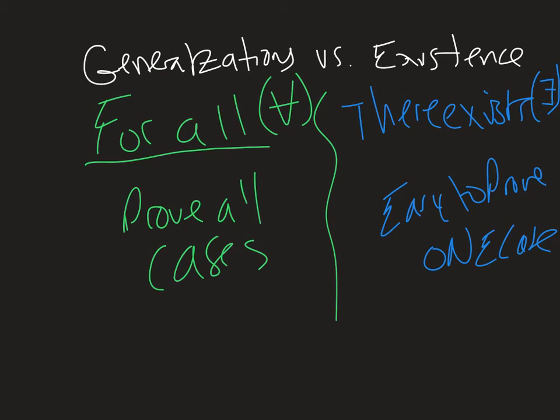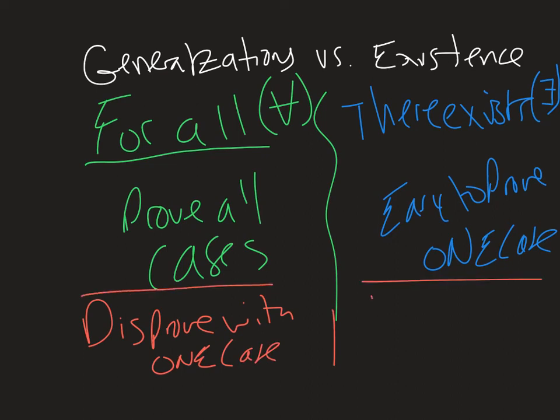Now, interestingly enough, to prove false, to disprove a generalization is much easier than existence. So, I can disprove a generalization with one case. And if I wanted to disprove an existence, that would be much more difficult. Because I'd have to disprove all cases.